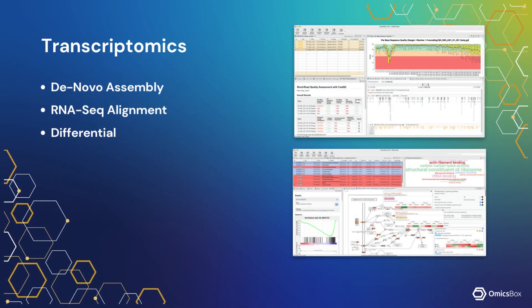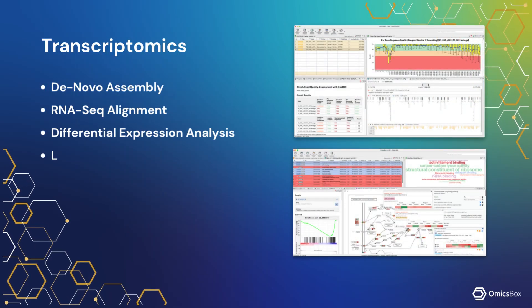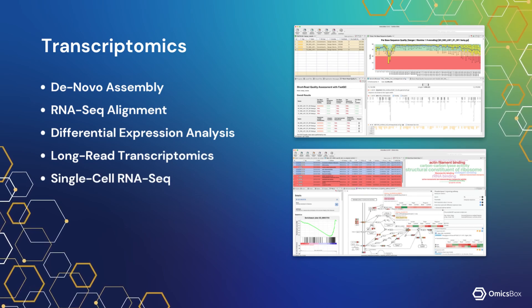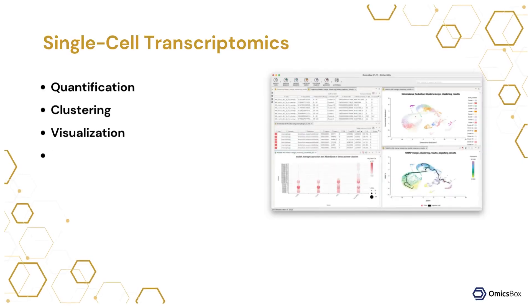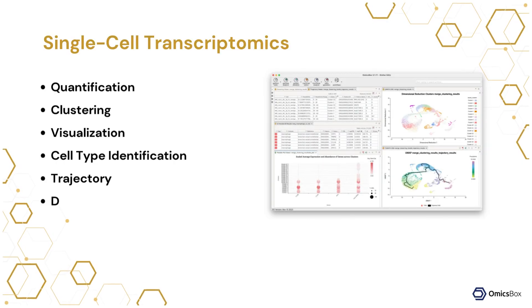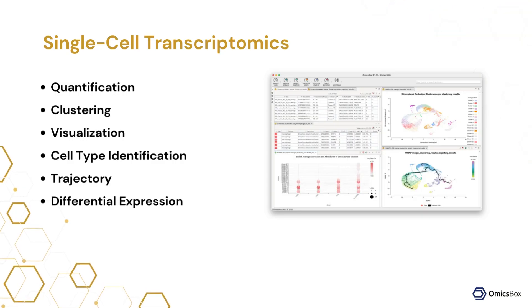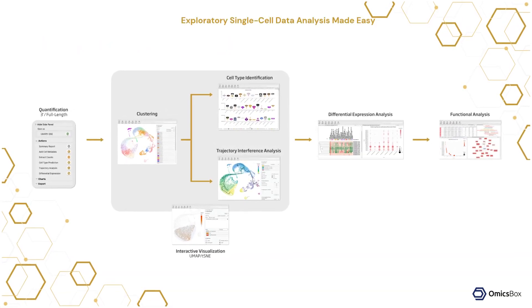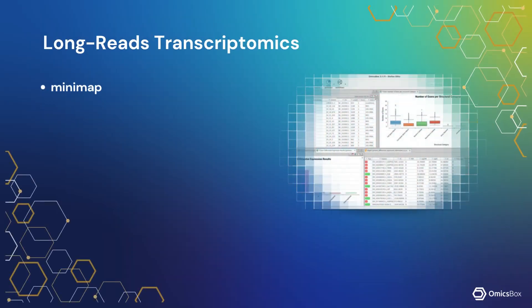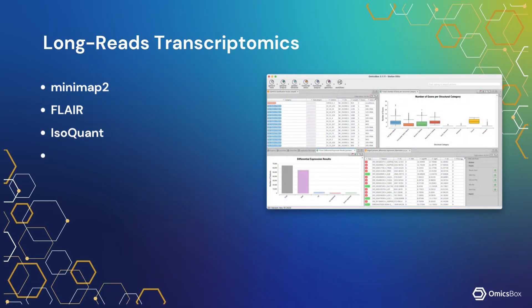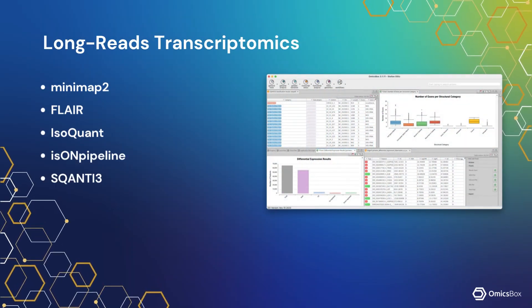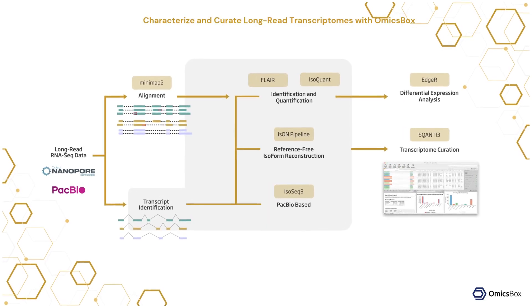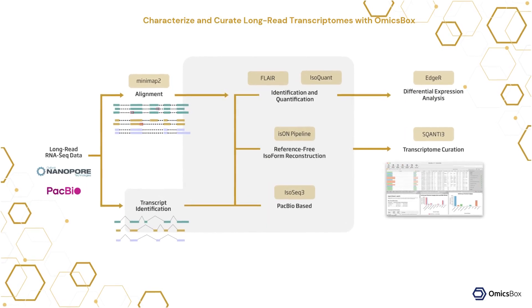Transcriptomics offers complete RNA-seq analysis, from bulk and single-cell workflows to advanced long-read features. The single-cell pipeline takes you from raw reads to clustering, cell-type annotation, and trajectory inference with ease. Long-read tools support both reference-based and reference-free datasets, enabling comprehensive isoform discovery across model and non-model organisms.